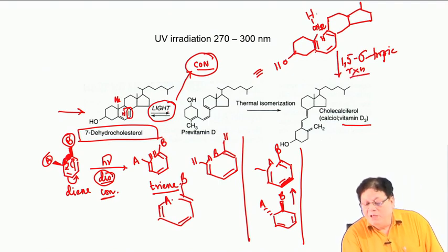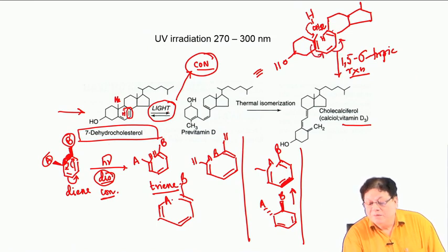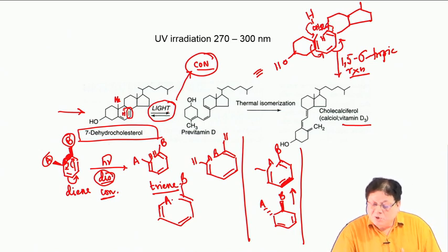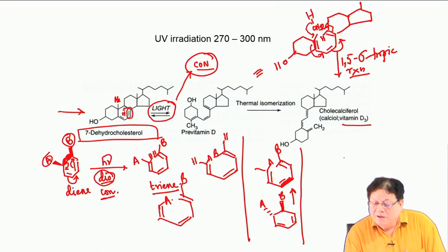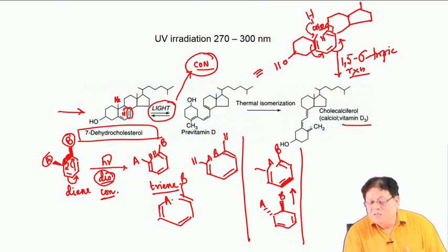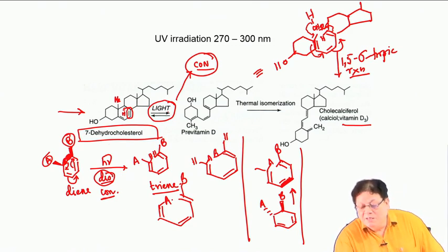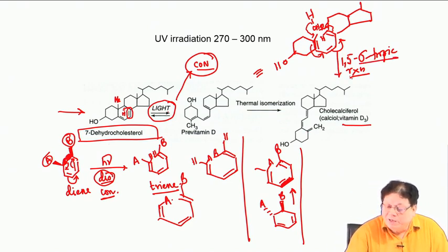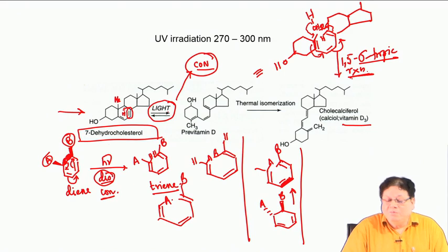In this sigmatropic reaction, one of the hydrogens of the methyl group shifts to the 5-position. Basically what you end up with is a double bond at the ring junction, a double bond at another position, and a =CH₂ group — meaning the methyl has become a methylene via the 1,5-sigmatropic shift preceded by the light-induced conrotatory motion.